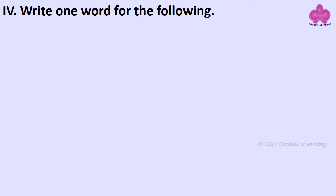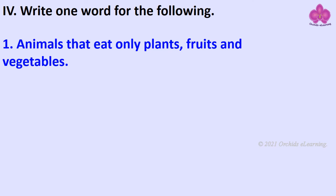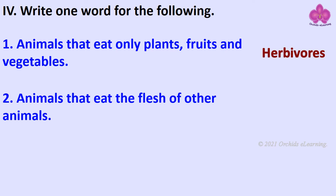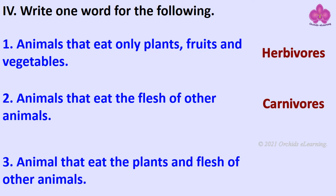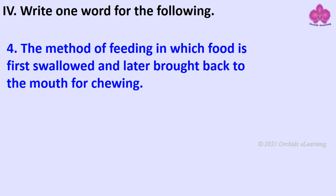Write one word for the following. Animals that eat only plants, fruits and vegetables: Herbivores. Animals that eat the flesh of other animals: Carnivores. Animals that eat plants and flesh of other animals: Omnivores. The method of feeding in which food is first swallowed and later brought back to the mouth for chewing: Chewing the cud.